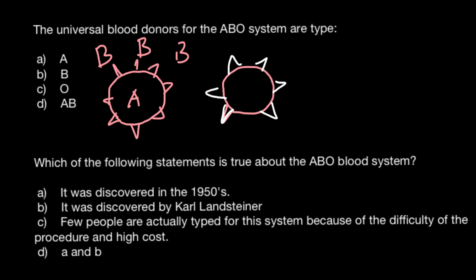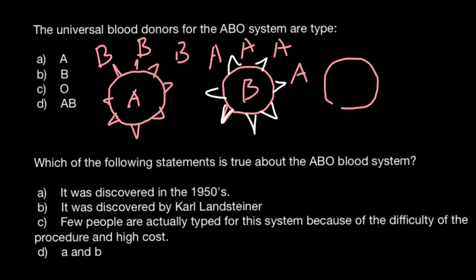The other group would be blood group B — on the surface we would find antigens B, and in the blood serum we would find antibodies A. The third blood group would be blood group AB, meaning on the surface of the red blood cell we can find both antigen A and antigen B determinants.